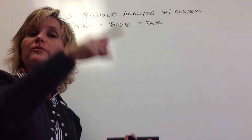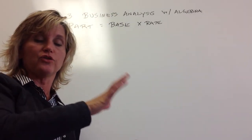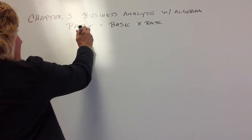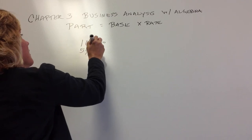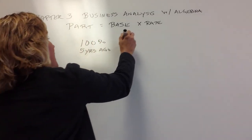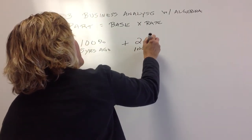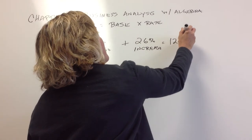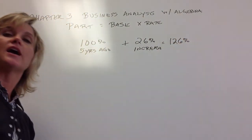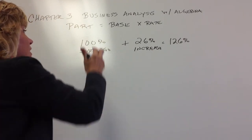Now, if you're thinking in terms of a pie, it's more than the whole pie. It's saying that it increased 26%. So our rate is 100% of what it was five years ago plus 26%. So the amount that they give me is actually 126% of what it was five years ago.